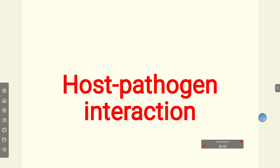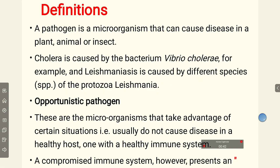So what is a pathogen? A pathogen is a microorganism that can cause disease in a plant, animal, or insect. For instance, cholera is caused by the bacterium Vibrio cholerae, and leishmaniasis is caused by the protozoa Leishmania donovani, among other Leishmania species.